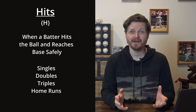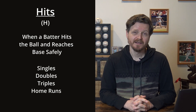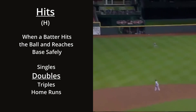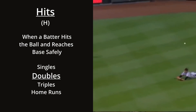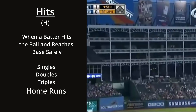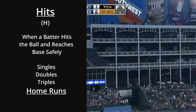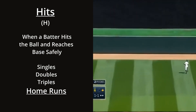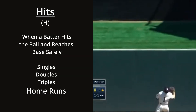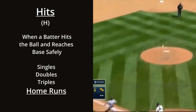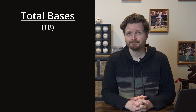Hits are further divided into singles, doubles, triples, and home runs, based on how far the batter is able to run. A ground ball reaching first base is a single; reaching second is a double; reaching third is a triple. A home run is either when a batter hits the ball over the outfield fence, or sometimes when the ball stays in play but the batter runs all the way around the bases and back to home before the ball can be thrown in.